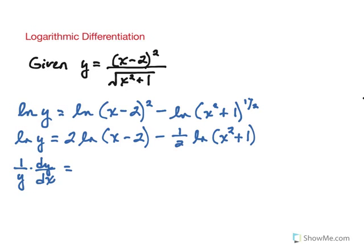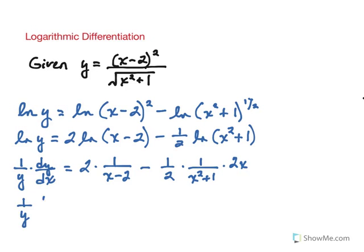On the right side, everything is in terms of x, so we'd be multiplying by dx/dx, which is of course 1. The derivative of 2 times the natural log of the quantity x minus 2 — we keep the 2 as the coefficient — gives 1 over x minus 2. Then minus the 1/2 times the derivative of the natural log of x squared plus 1, which requires the chain rule: 1 over x squared plus 1, multiplied by the inside derivative, which is 2x.